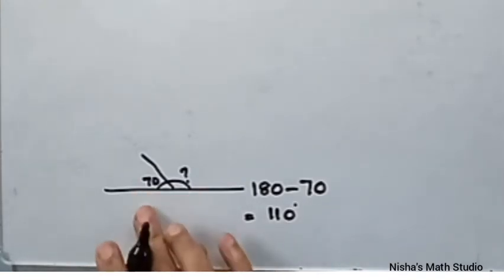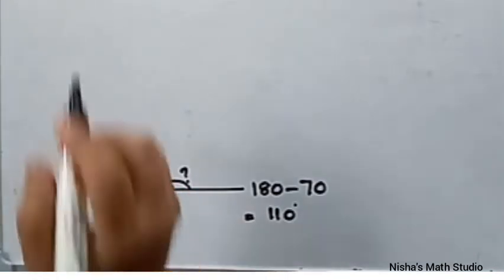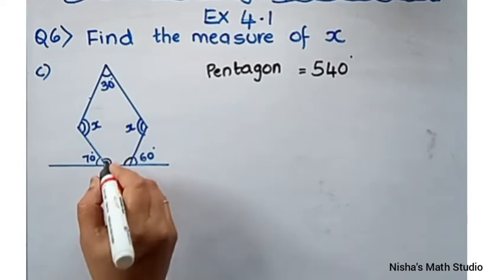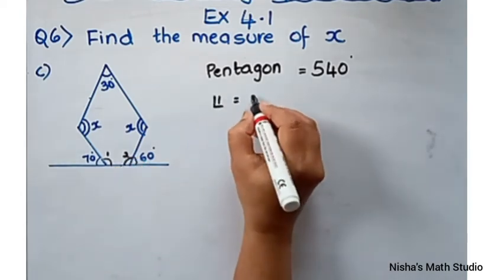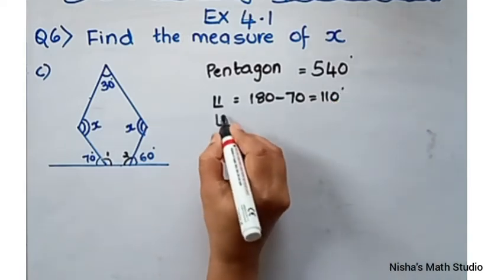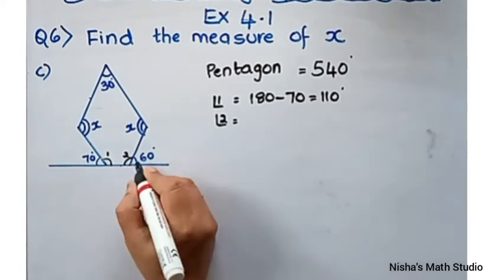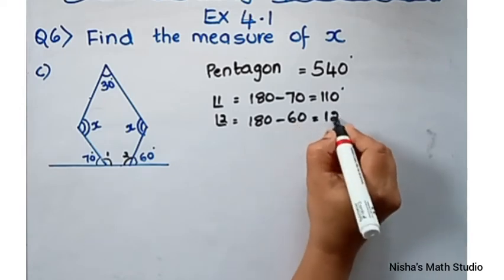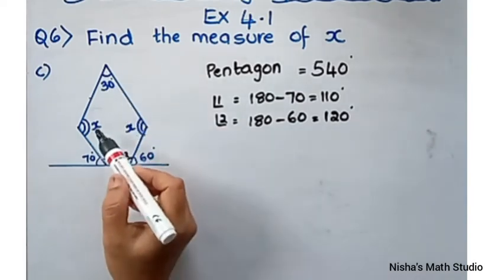Such angles are called linear pairs — the total of two angles on a straight line should be 180 degrees. So angle 1 equals 180 minus 70, which is 110 degrees. Similarly, since the outside angle is 60 degrees, angle 2 equals 180 minus 60, which is 120 degrees. So now we have the five angles: 30, x, 120, 110, and x.